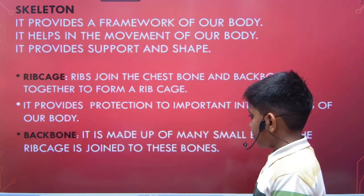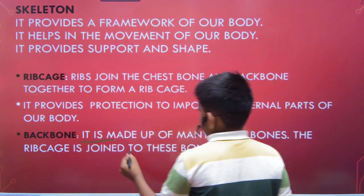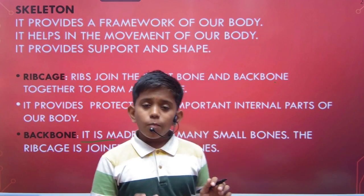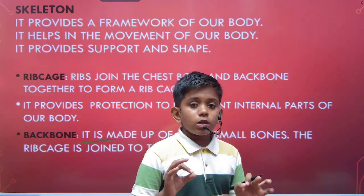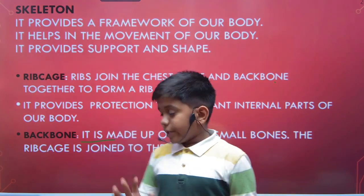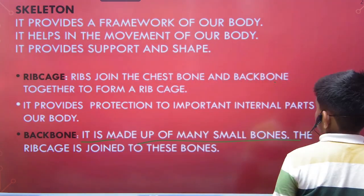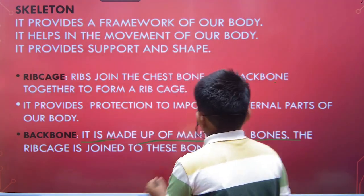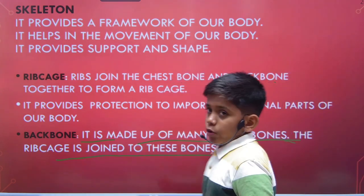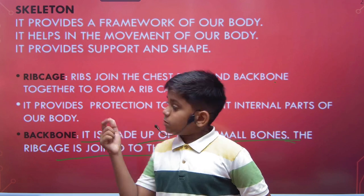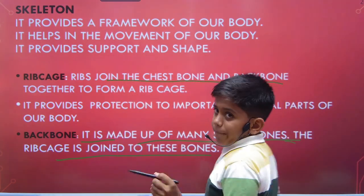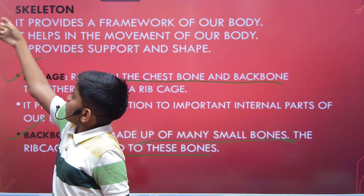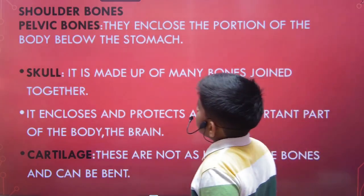Next, the most important part of our skeletal system is the backbone. Without the backbone you cannot stand upright. It is made up of many small bones. The rib cage is joined to these backbone bones. The backbone is the most important part, and the rib cage joined to it protects the lungs.